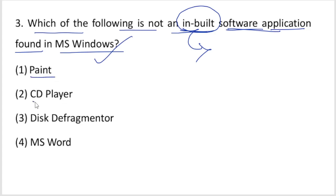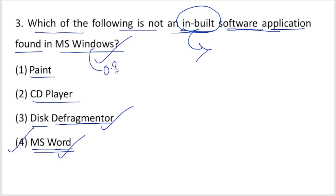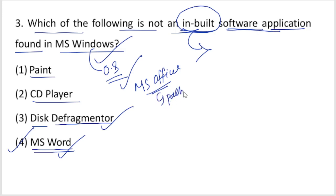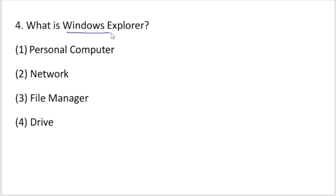Microsoft Paint is pre-installed. CD Player is also installed. Disk Defragmenter helps defragment local disks and CD media — it is also installed. But Microsoft Word is not pre-installed. MS Office, which includes MS Word, is a separate package you install after setting up the Windows operating system. So MS Word is not an inbuilt application — option 4 is your right answer.